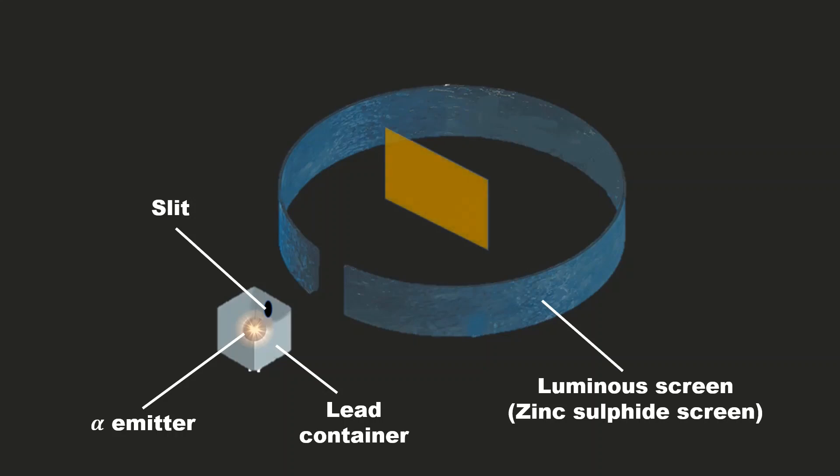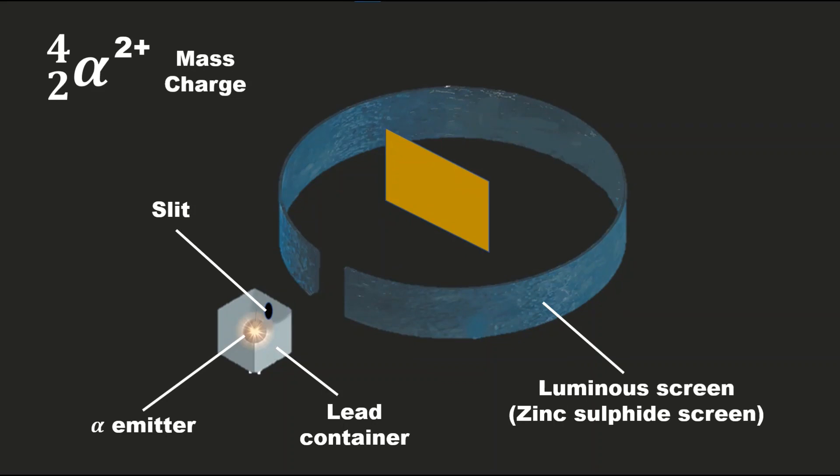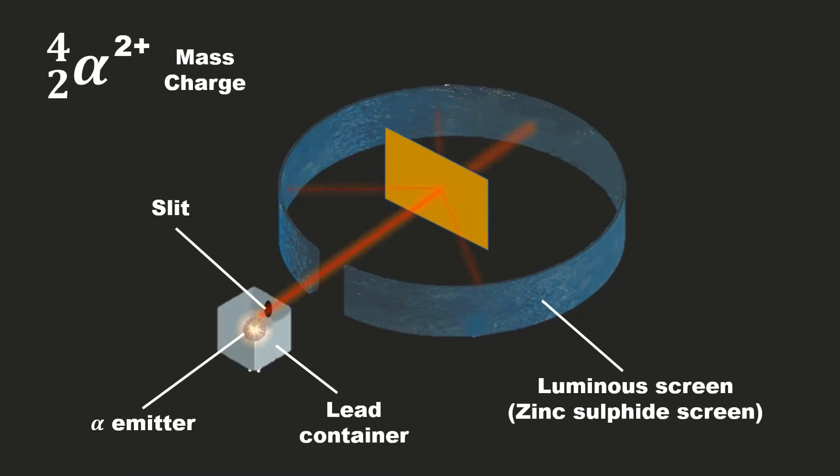He kept a thin gold foil in the middle. The alpha particles have a mass and also have a charge. To stop or deflect an alpha particle, there should be mass and a charge. Assuming that plum pudding model was correct, he started the experiment.